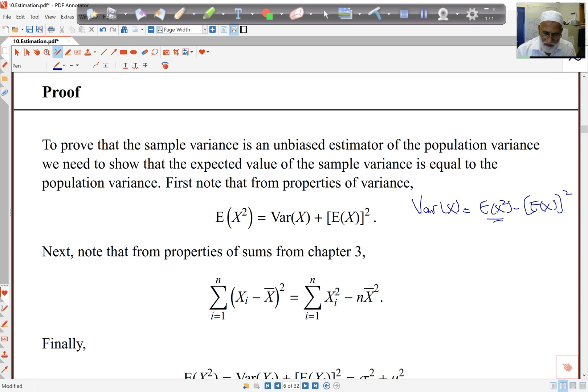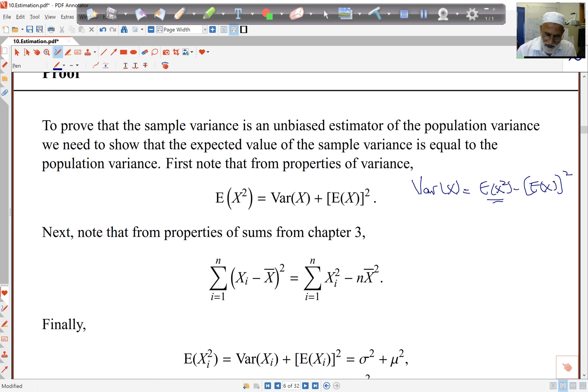And we also know from my earlier work on chapter 3 that the sum of Xi minus X bar squared is the sum of Xi squared minus n X bar squared.